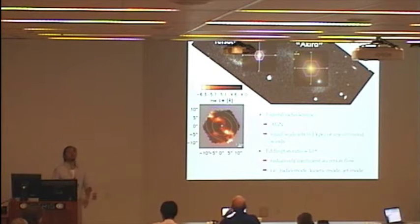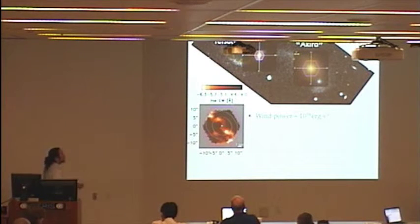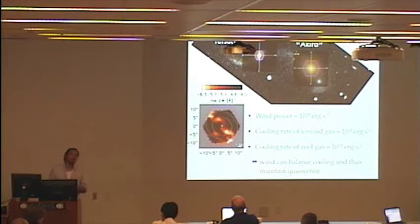Now, even if this is an AGN-driven wind, it would be meaningless if it didn't shut down or prevent star formation in Akira. But encouragingly, from our order of magnitude estimates, we find that the power of the wind is about 10 to the 39 ergs per second, while the cooling rate of the warm ionized gas is about 10 to the 38 ergs per second, and the cooling rate of the cool gas, traced by the sodium D, is about 10 to the 39 ergs per second. Thus, the AGN-driven wind can balance the cooling rate of the gas and maintain Akira's quiescence.